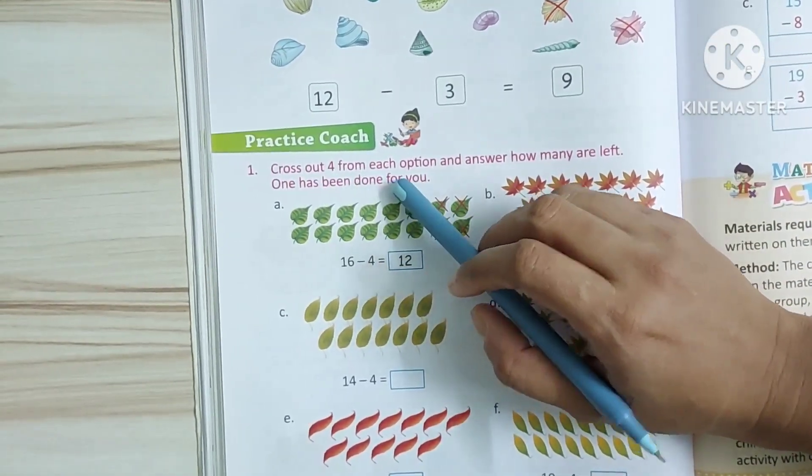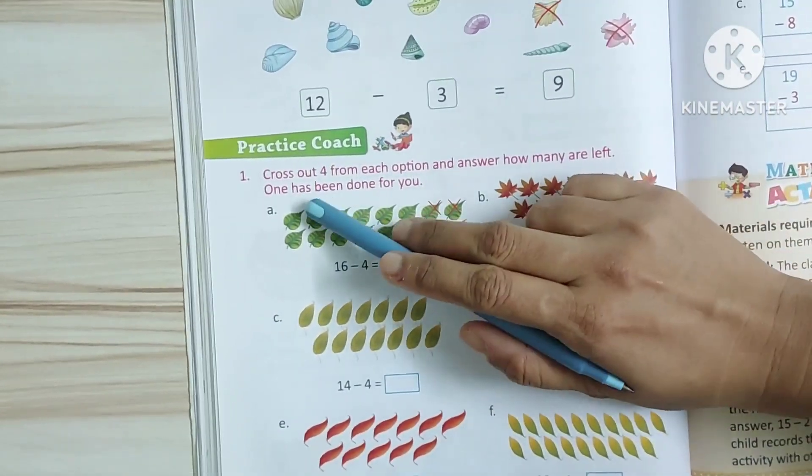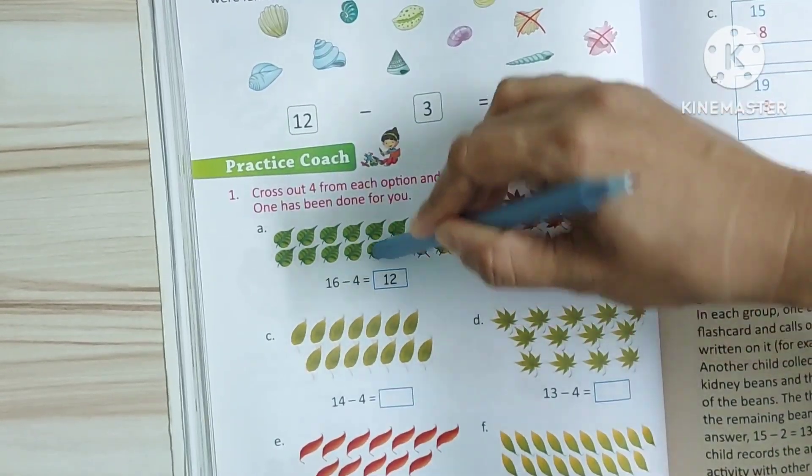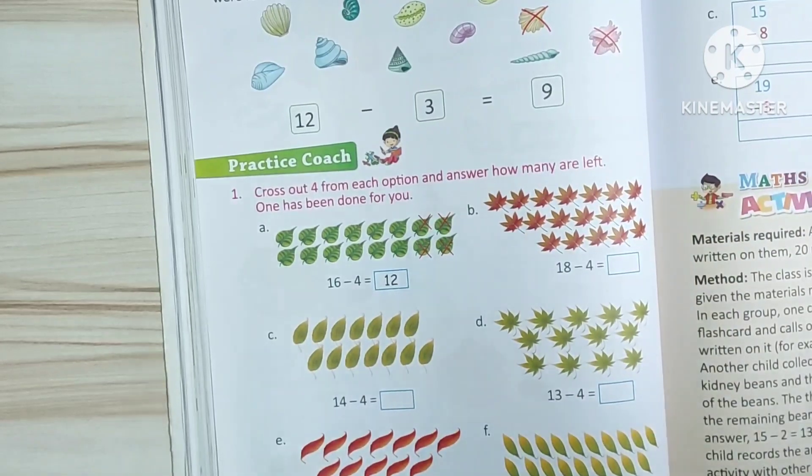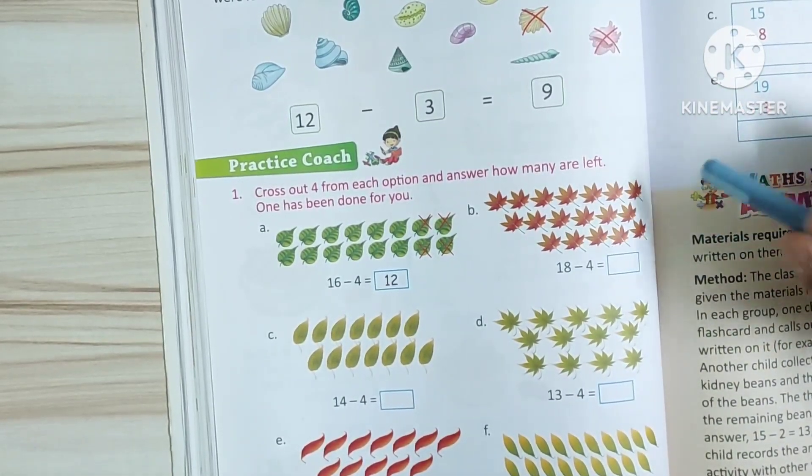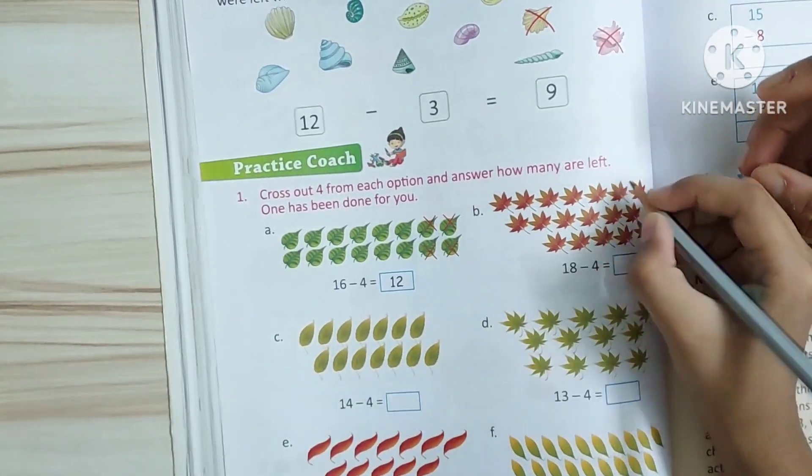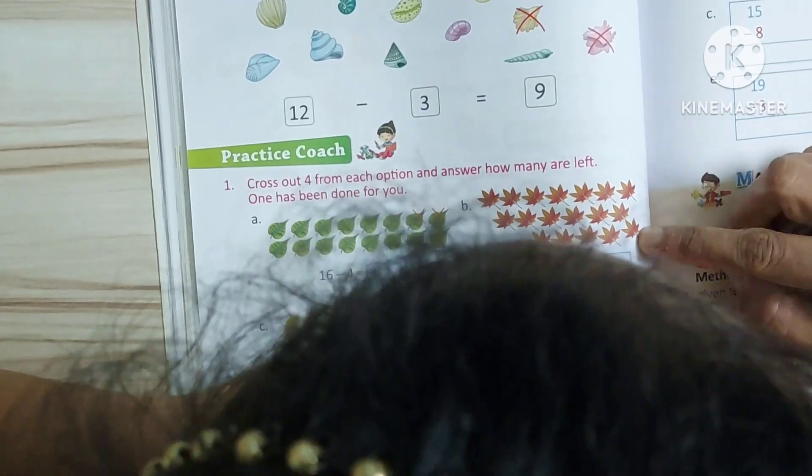Cross out 4 from each option and answer how many are left. One has been done for you. So, one is done. Second one is 18 minus 4. Cross out 4. Four cross out. Last one there.